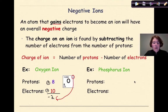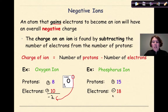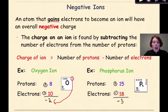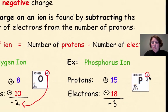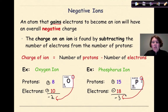Now let's look at phosphorus. Phosphorus has 15 protons and 18 electrons. Protons are positive and electrons are negative, so the difference between 15 and 18 is 3. I have more electrons than protons, so this is a negative 3 charge. If I look at my periodic table, one of the charges listed for phosphorus is minus 3. So given the information in this example, my charge would be minus 3.